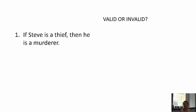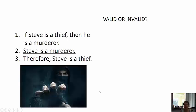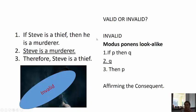Here's another argument — valid or invalid? If Steve is a thief, then he's a murderer. Steve is a murderer, therefore Steve is a thief. Does this demonstrate the good form of modus ponens, or has something gone astray? It's actually invalid.